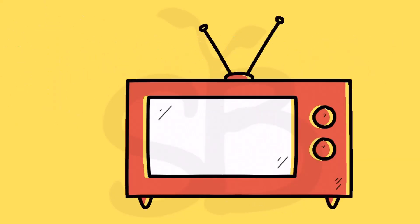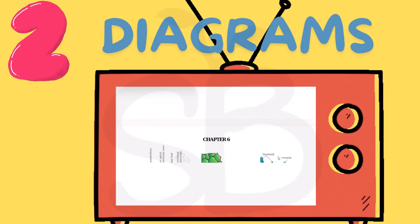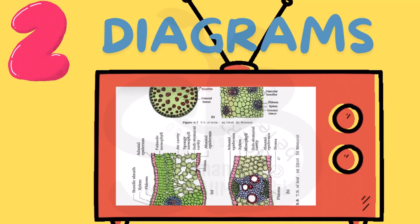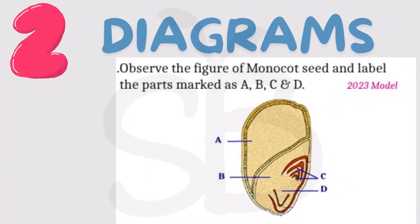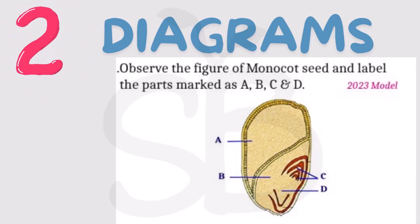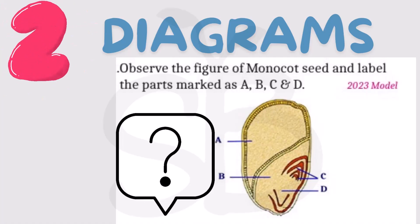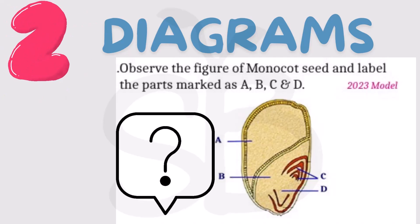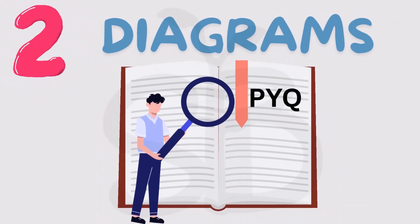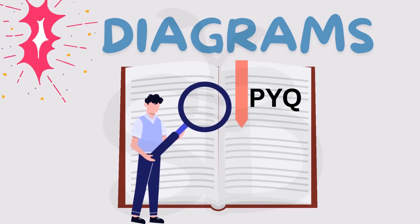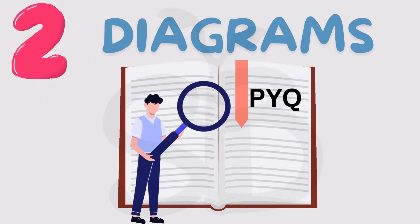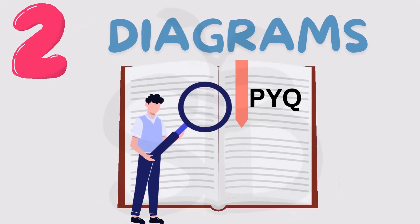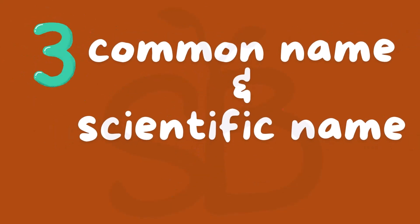Point number 2 is diagrams. NCERT books contain a variety of diagrams, and in our biology exam, questions are asked from those diagrams. Diagrams are marked with labels A, B, C, and D. In chapters, NCERT diagrams are repeated in question papers, so you need to study those diagrams in detail and be able to show them clearly in your answers.